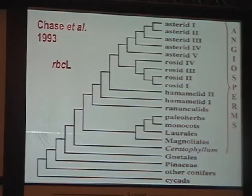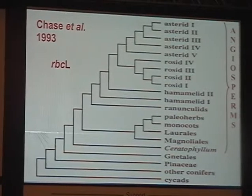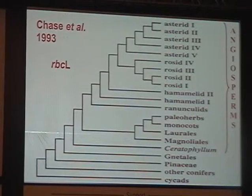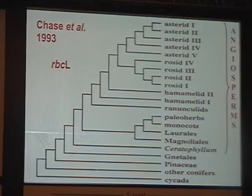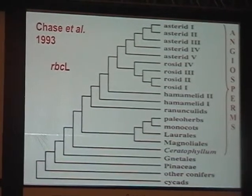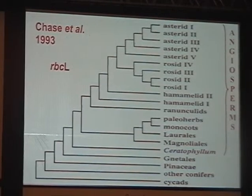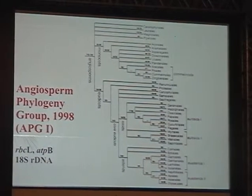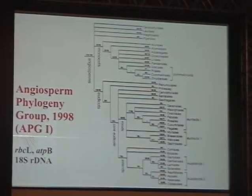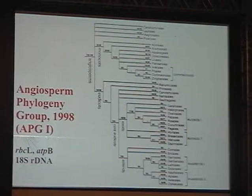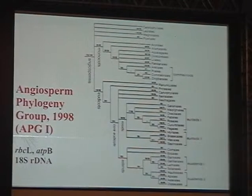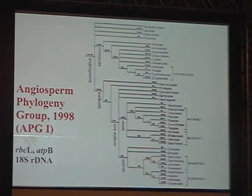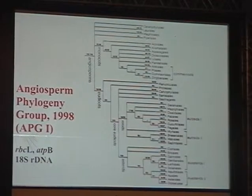Around that time, the first angiosperm molecular phylogeny came out, and researchers were still testing whether monocots were monophyletic and things like that. It was only in 1998 that the first phylogeny for angiosperms was published by the Angiosperm Phylogeny Group, and from then on things started to become more stable. But this is just to remind us how recent this all is, and how fast methods are still changing.